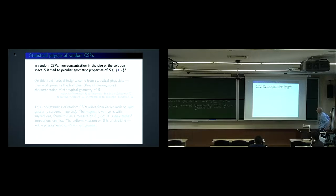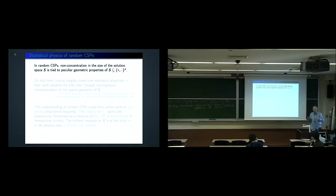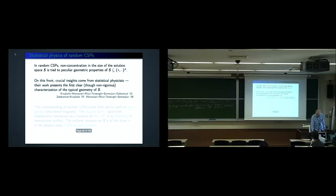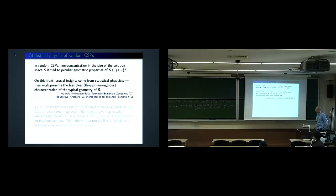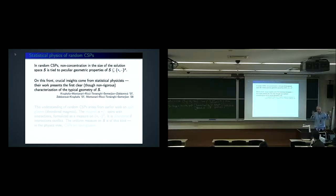The reason that in random CSPs the size of the solution space is not concentrated has to do with the geometrical properties of this set. If you choose a set at random with i.i.d. variables, the size is extremely concentrated by the law of large numbers. But that's not the case here. Statistical physics gives a non-rigorous but useful characterization of the typical geometry of S, explained in papers from 2007–2008 that form the basis of the picture shown earlier.